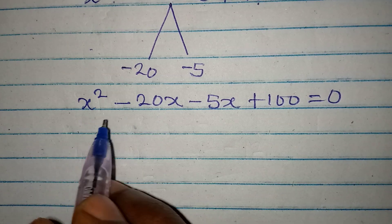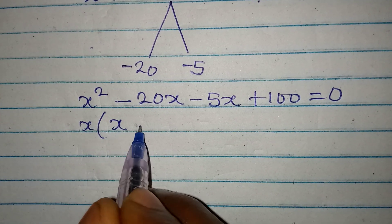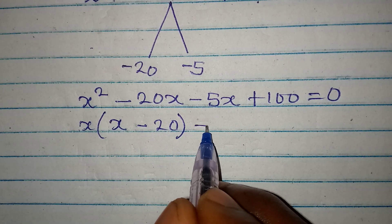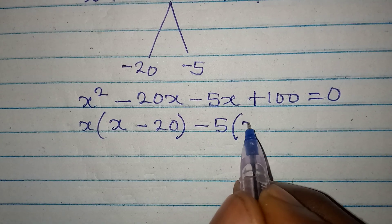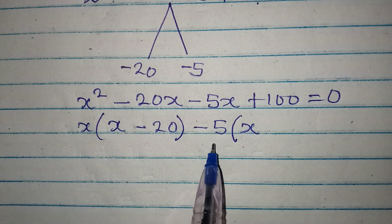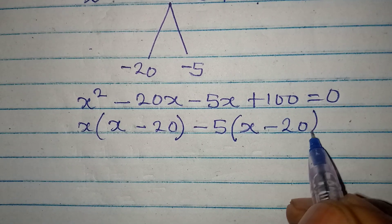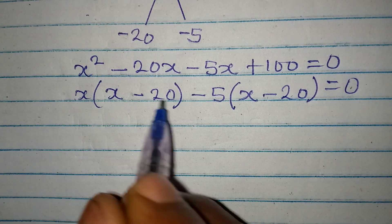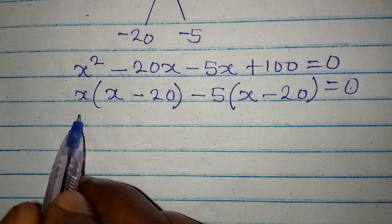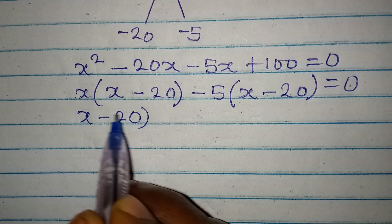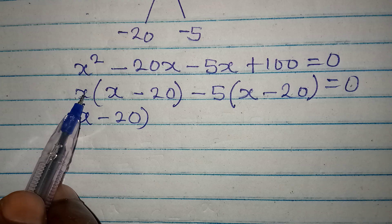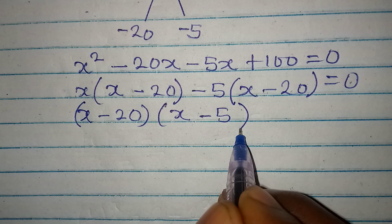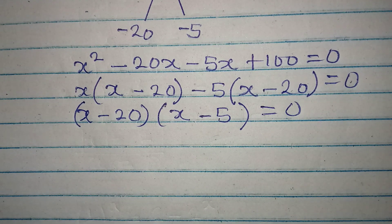Now group these two pairs. From the first group, x is common, giving x times (x minus 20). From the second group, minus 5 is the common factor, giving minus 5 times (x minus 20), and this equals zero. Now x minus 20 is a common factor, so we factor it out: (x minus 20)(x minus 5) equals zero.